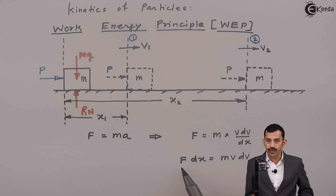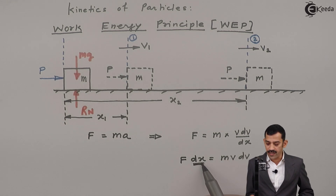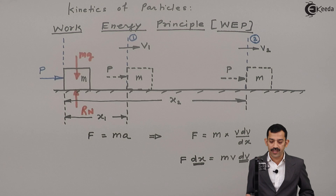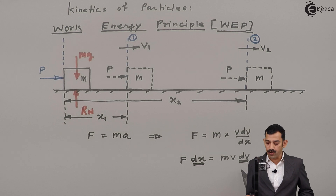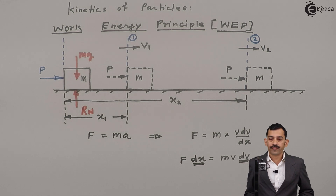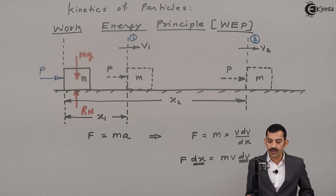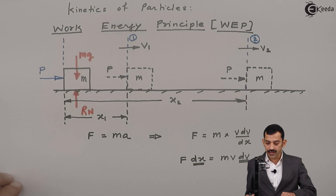This represents: when force F (which here equals P) acts on a body, for a small displacement dx, the velocity of the block varies by dv. If we want to analyze from position 1 to position 2, we integrate this equation from position 1 to 2, where displacement varies from x1 to x2 and velocity varies from v1 to v2.